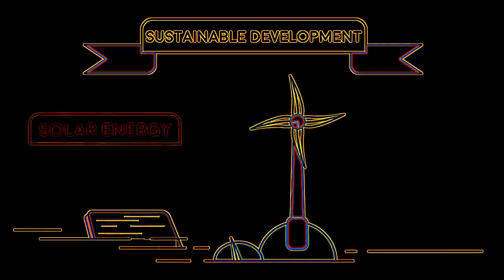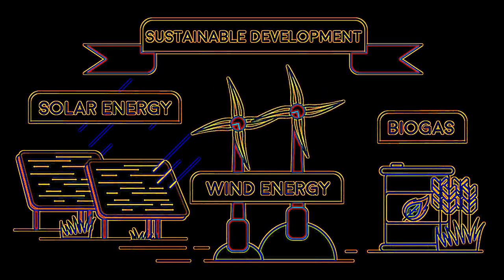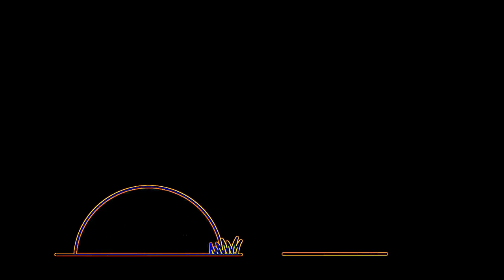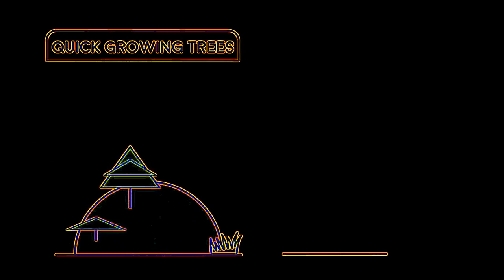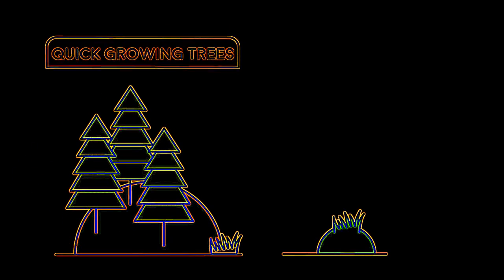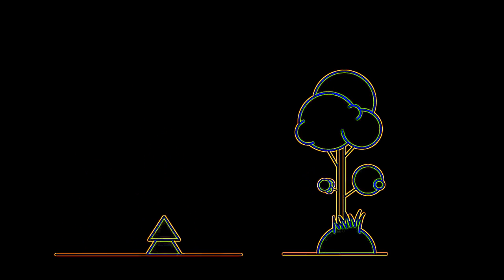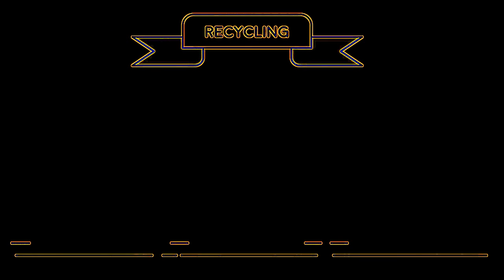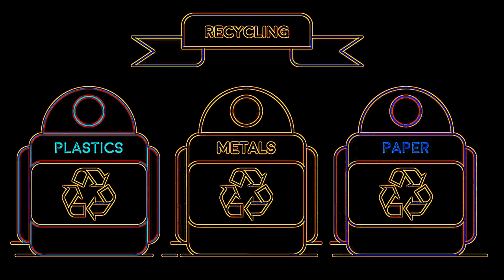This is where sustainable development comes in. One way is to use renewable resources such as solar energy, wind, and biogas to generate electricity rather than fossil fuels. Another example is using quick-growing trees like pine as a source of wood. These trees can be cut down and replanted, providing an ever-ready supply. This is more sustainable than using slow-growing trees like oak, which take hundreds of years to reach maturity.